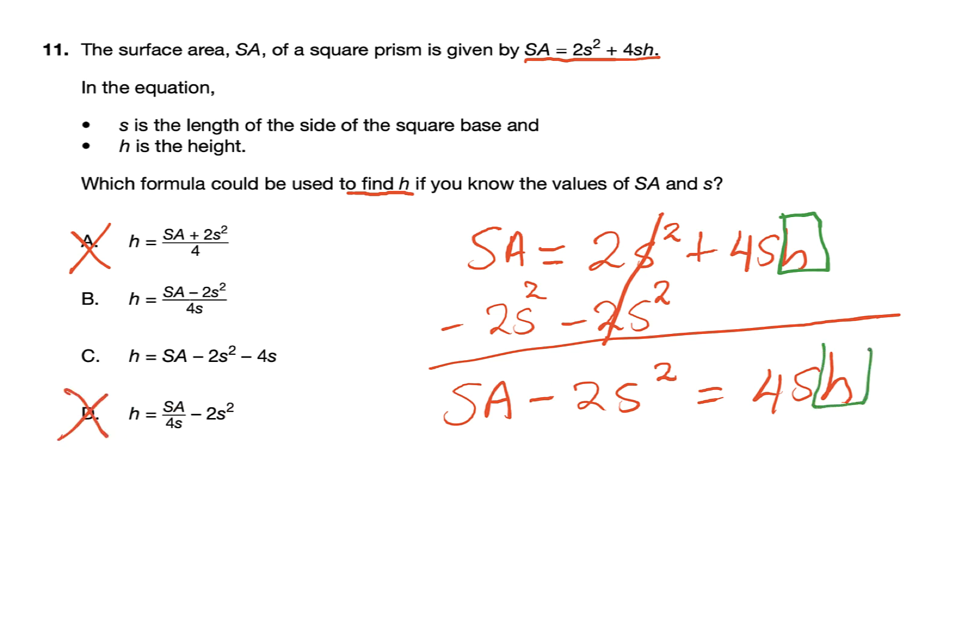We are solving for h. If I need to get h by itself, h is connected to the 4 and the s by multiplication. To undo multiplication, you would have to divide. So we will have to divide both sides by 4s. Your h, we're looking for SA minus 2s squared over 4s. So my answer is B.